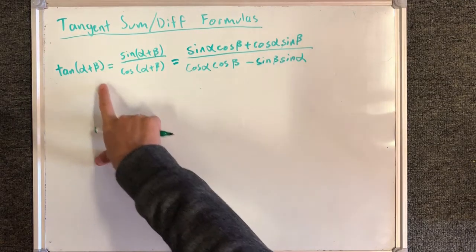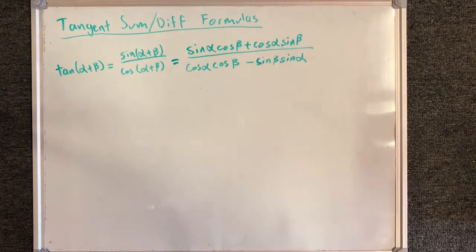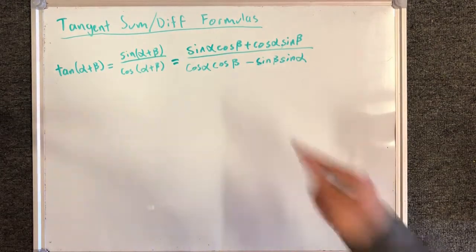For tangent of alpha plus beta, I can rewrite this as sine alpha plus beta over cosine alpha plus beta, which we know the resulting expressions for.